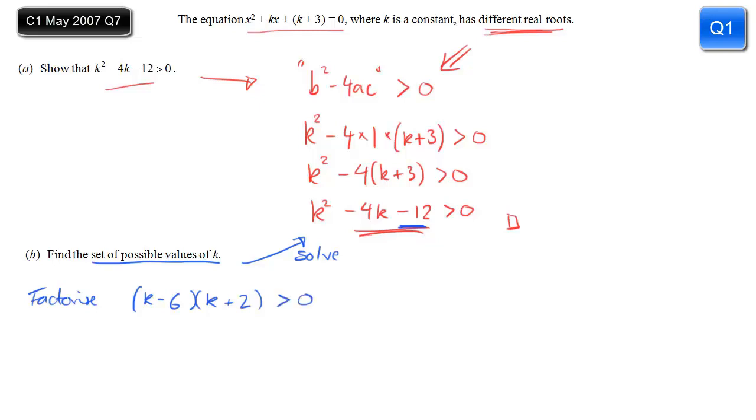So we factorised it, that's greater than 0, and so I can read off from that my critical values. These are going to be the boundary values between the region that I want and the region that I don't want. So from the second bracket, k equals minus 2, and from the first bracket, k equals 6. All we need to do now is do a quick sketch, see what the graph of k² - 4k - 12 would look like, very roughly. The positive coefficient of k², so it's the right way up, and the critical values, that's where it crosses the k axis, so that's minus 2 and plus 6.